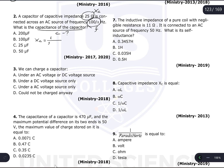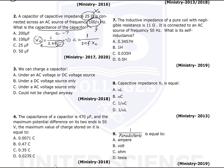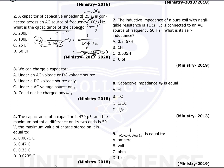This equation calculates X_C, but now we need to calculate C, not X_C. We rearrange by cross-multiplying, so C equals 1 divided by 2πf·X_C. Inserting the numbers: C = 1 divided by 2π times (100/π) times 25. The π terms simplify.